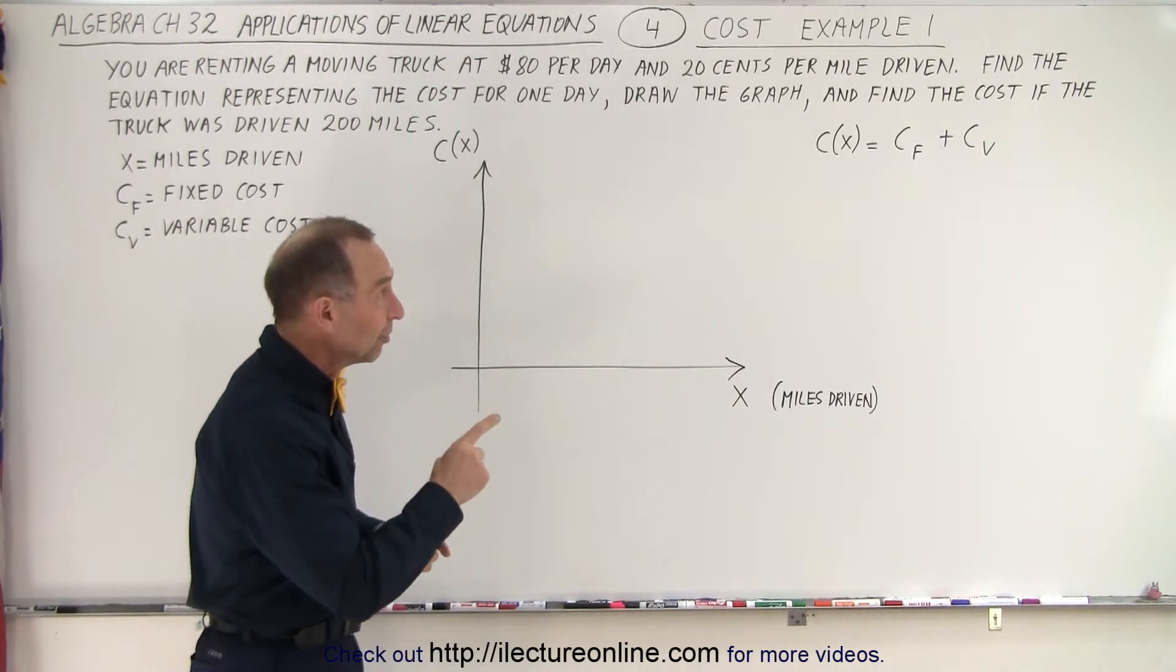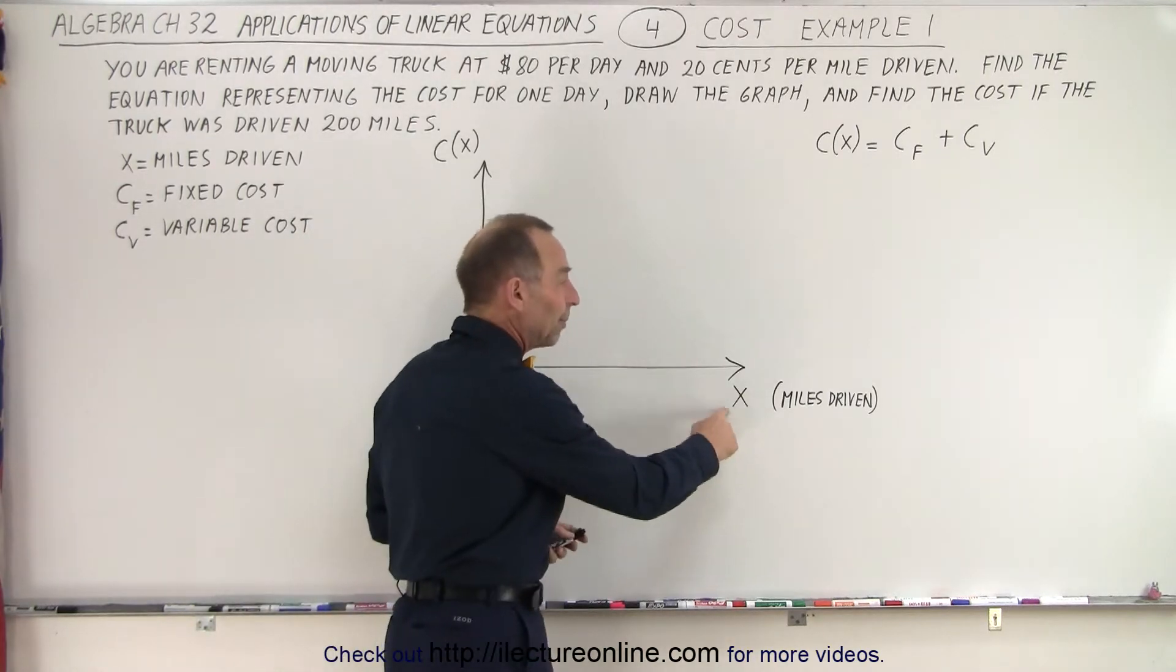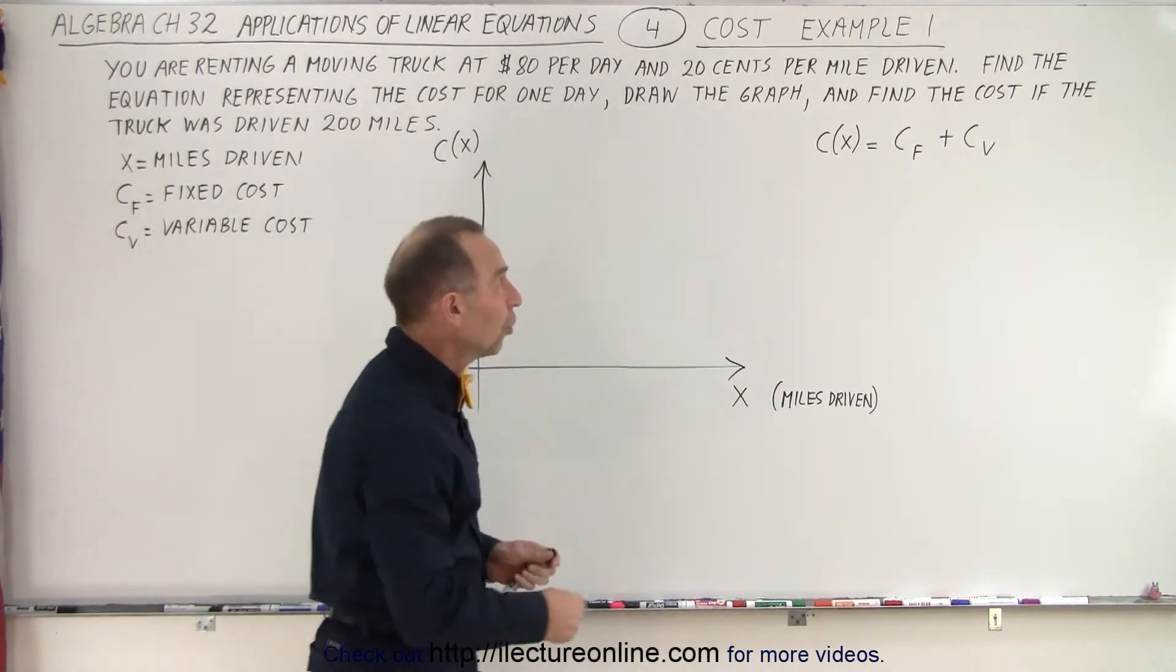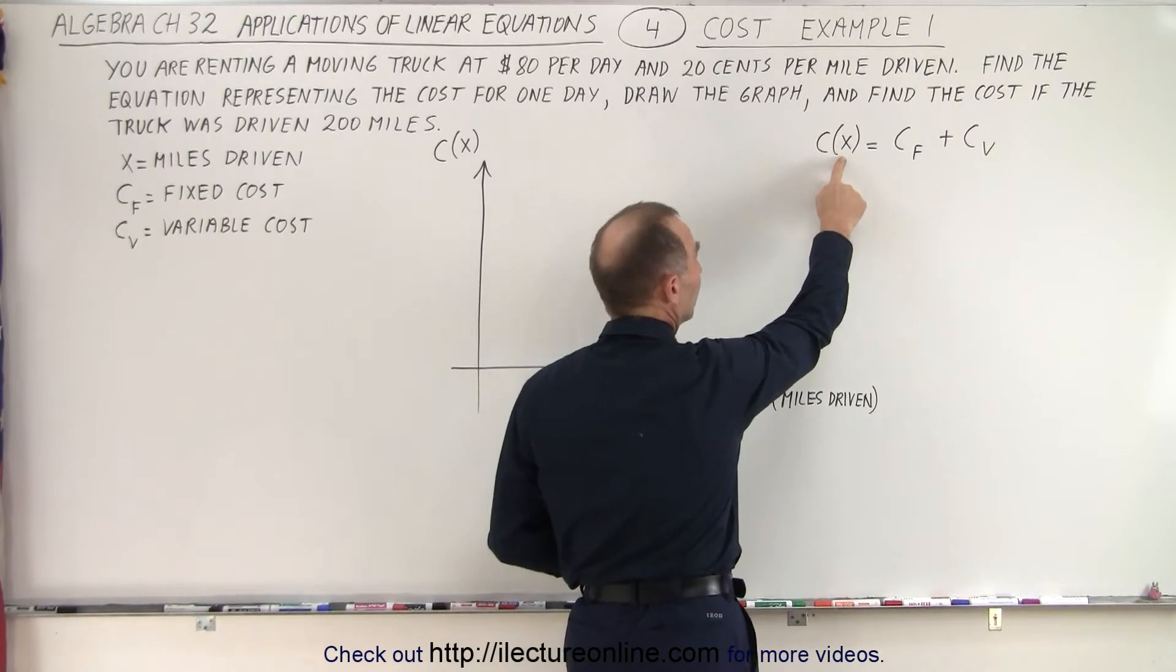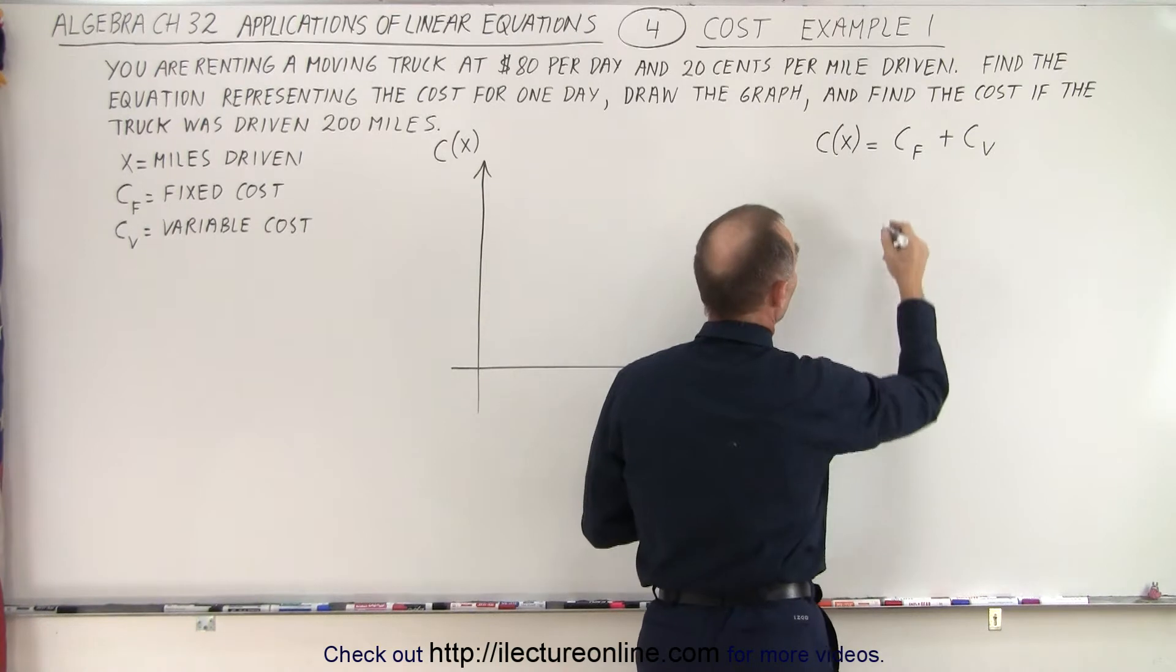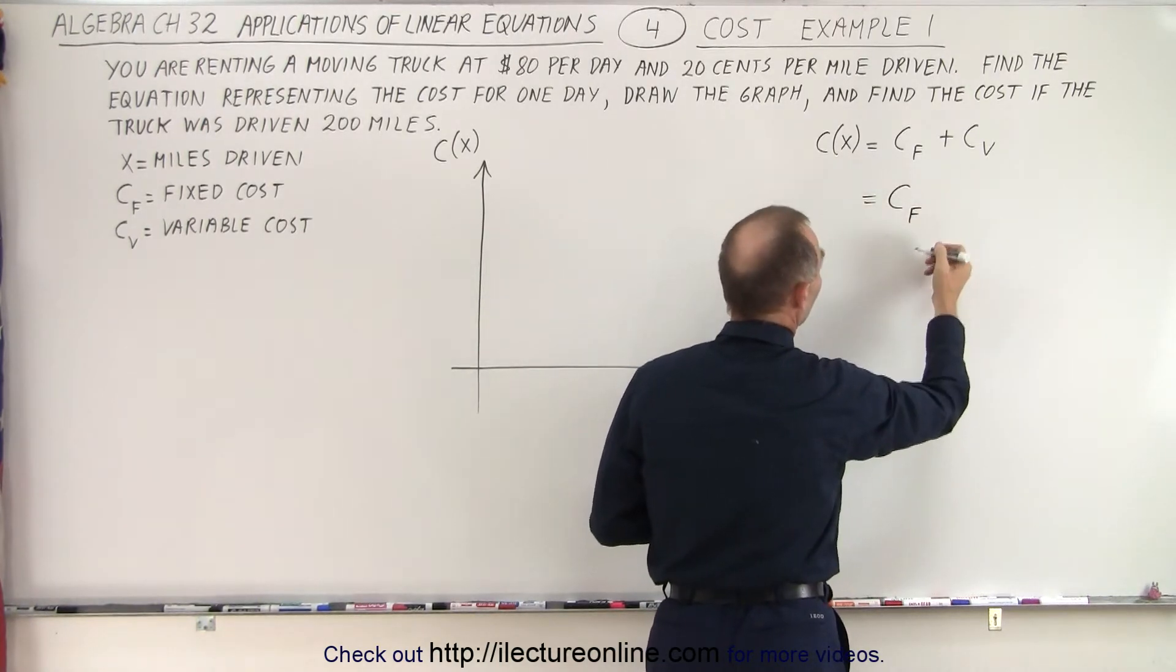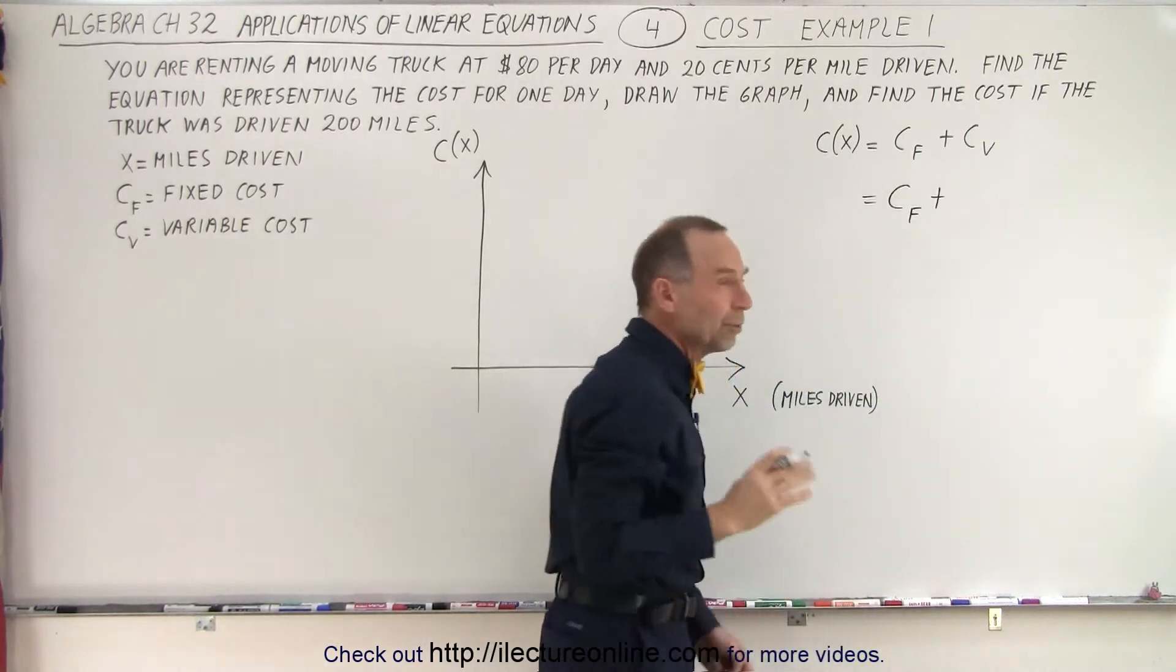So what we need to do first is come up with an equation. And notice that we're going to use x to represent the miles driven. So the total cost as a function of miles driven is equal to the sum of the fixed cost plus the variable cost. Now the fixed cost is simply going to be the $80. So we'll write this fixed cost.